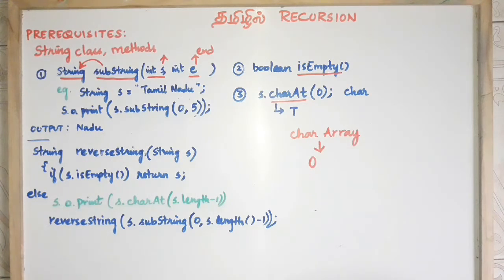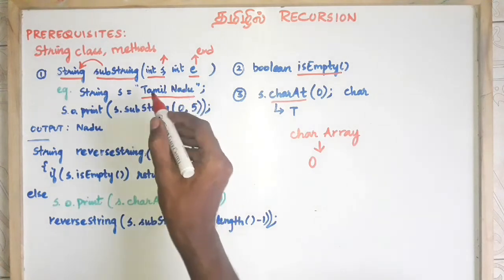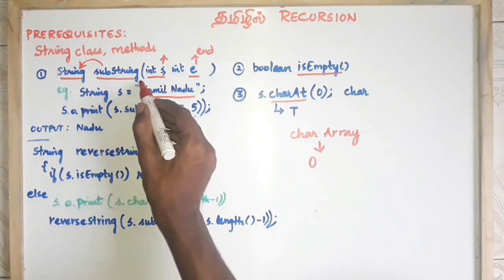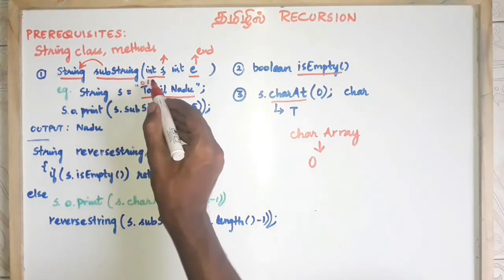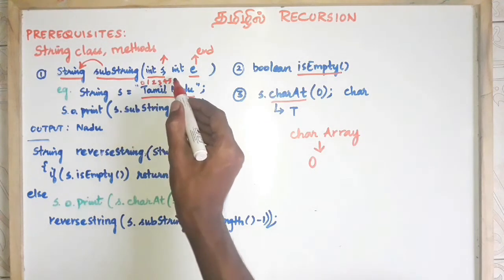You can see the substring method structure here. I will use a substring example with the string 'Tamil Nadu'. We can see the index values: T=0, a=1, m=2, i=3, l=4, space=5, N=5...